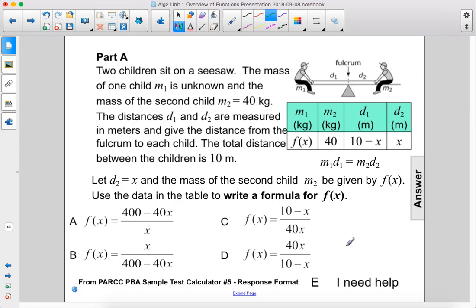Two children sit on a seesaw. The mass of one child, M1, is unknown, and the mass of the second child, M2, equals 40 kilograms.